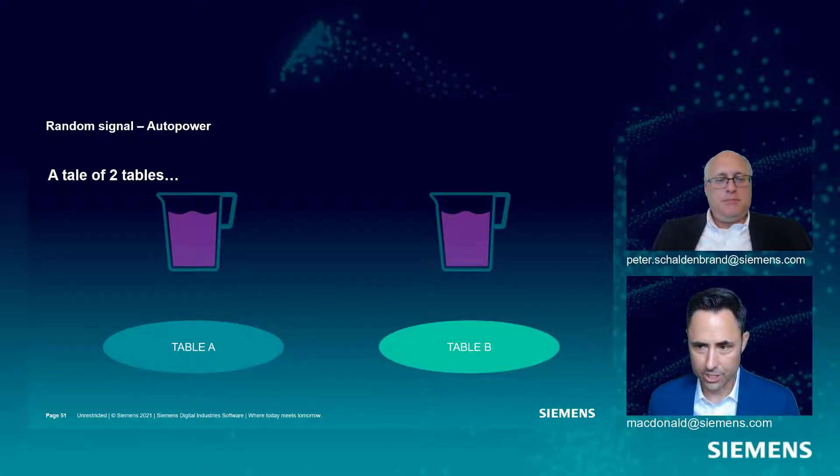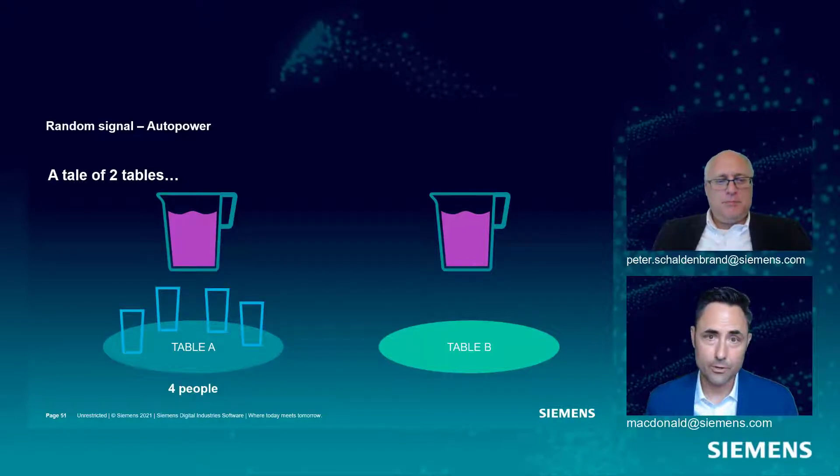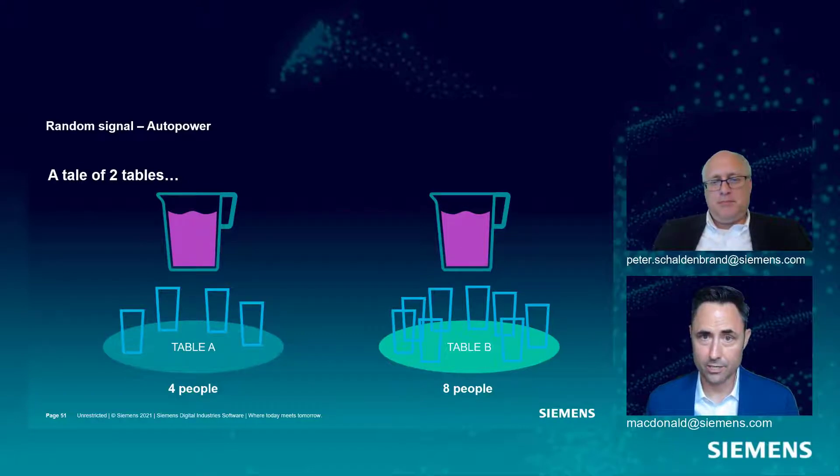Each table decides they're going to go up to the snack bar and get a pitcher, in this case it looks like grape Kool-Aid. They each get a pitcher and these pitchers are identical. However, at Table A there are four people and at Table B there are eight people. They each have the same pitcher to share.